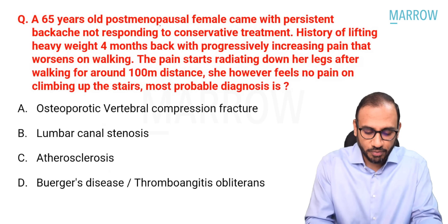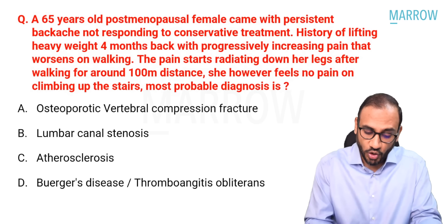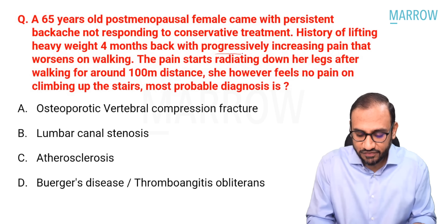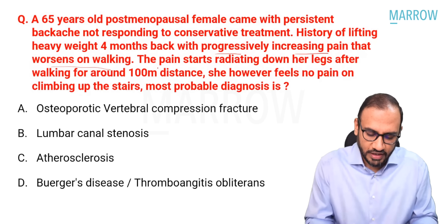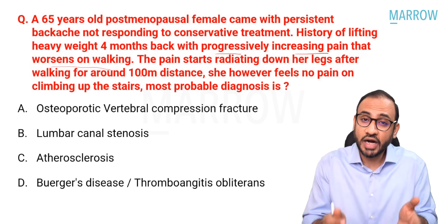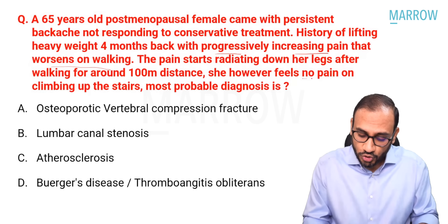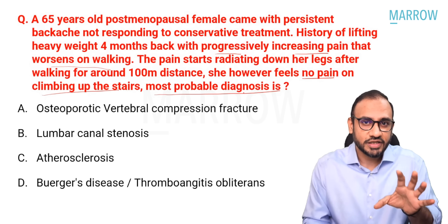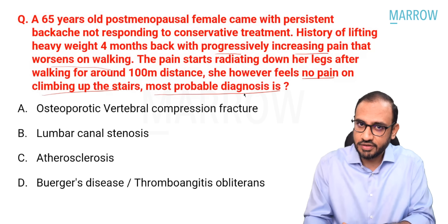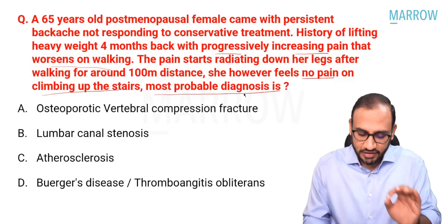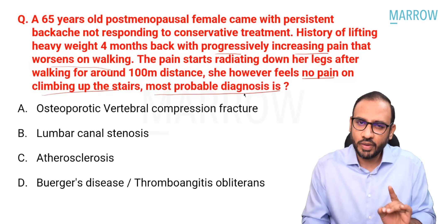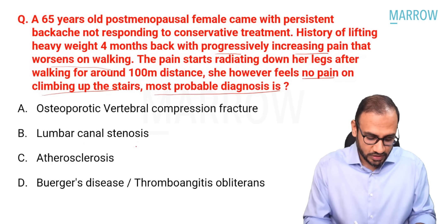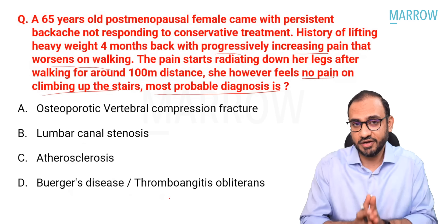Question one: A 65-year-old post-menopausal female came with persistent backache not responding to conservative treatment. There is a history of lifting heavy weights four months back with progressively increasing pain that worsens on walking. The pain starts radiating down her legs after walking around 100 meters. She feels no pain on climbing up the stairs. The options are osteoporotic vertebral compression fracture, lumbar canal stenosis, atherosclerosis, or Buerger's disease.